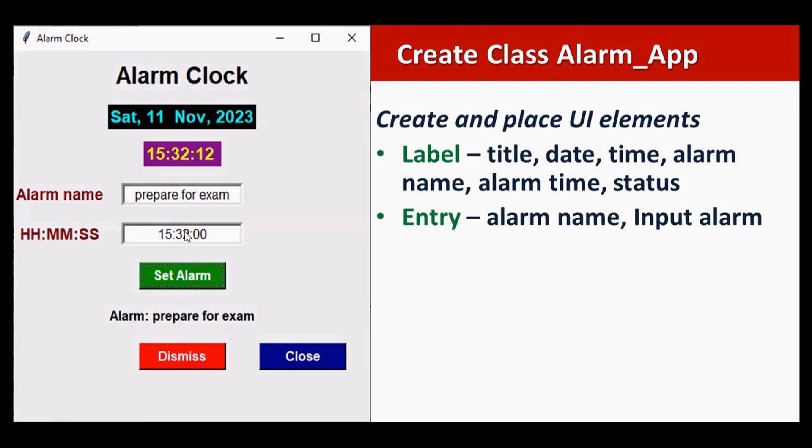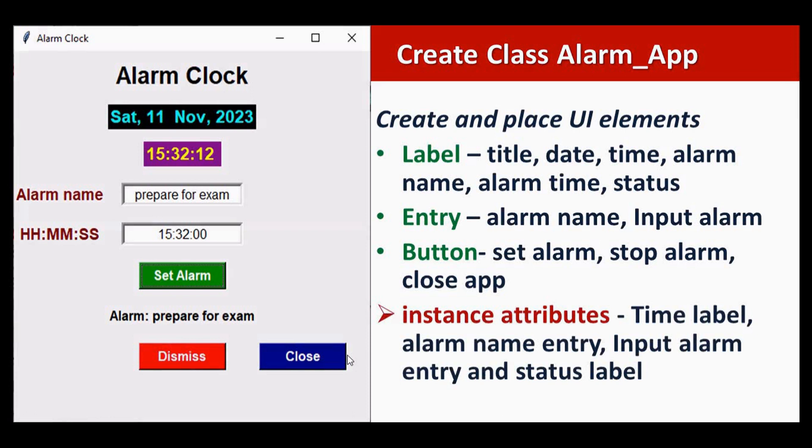Two entry widgets: one for getting the alarm name and another for getting the input alarm time. Then three buttons: one for setting the alarm, next for stopping the alarm, and then the last one is for closing the application. Here inside the class we are placing the attributes.